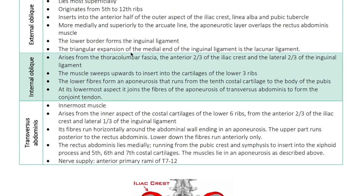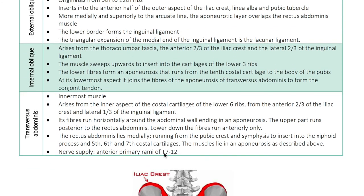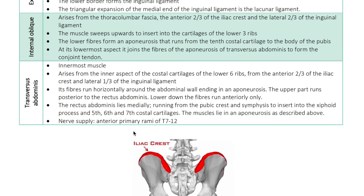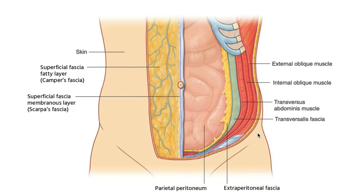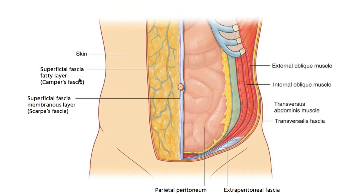Regarding nerve supply, the transversus abdominis is supplied by T7 to T12 thoracic outflow — specifically the anterior primary rami of T7 to T12 spinal nerves.